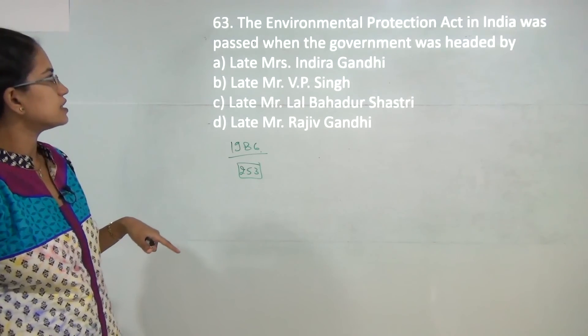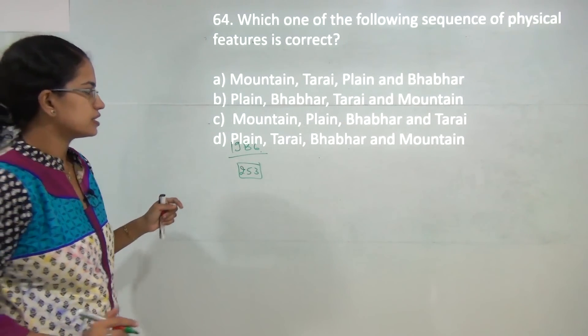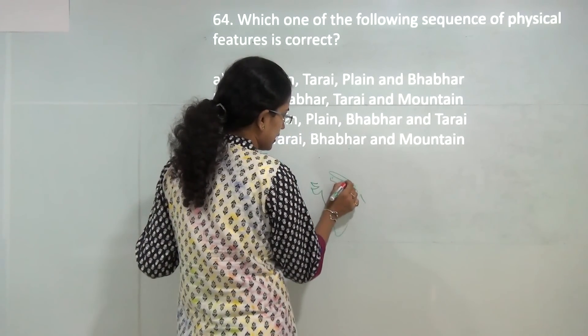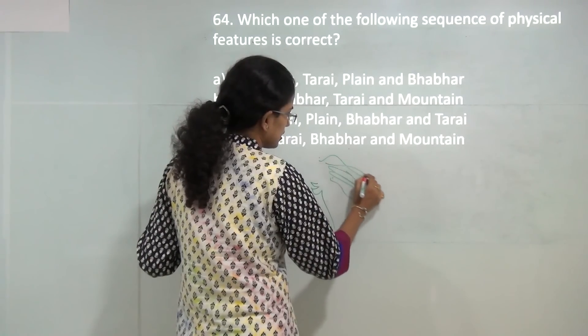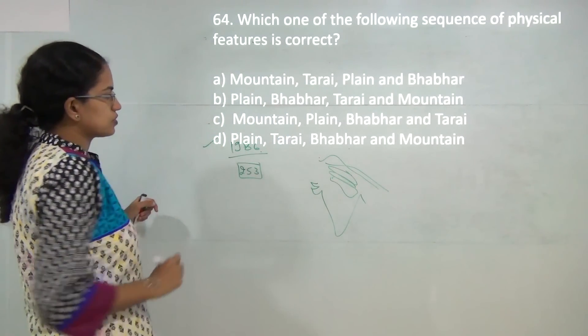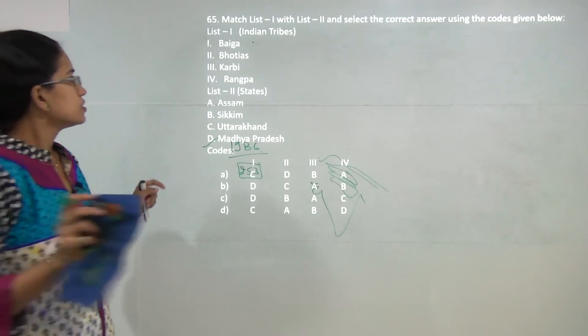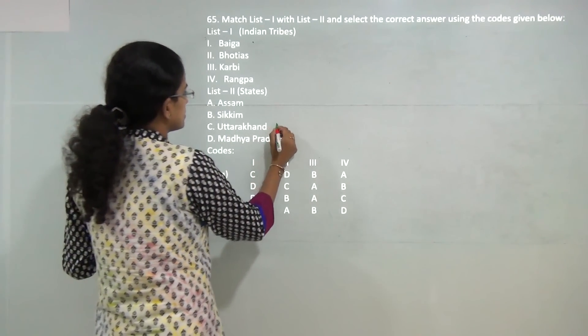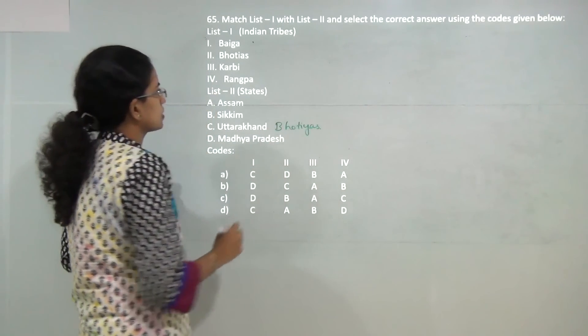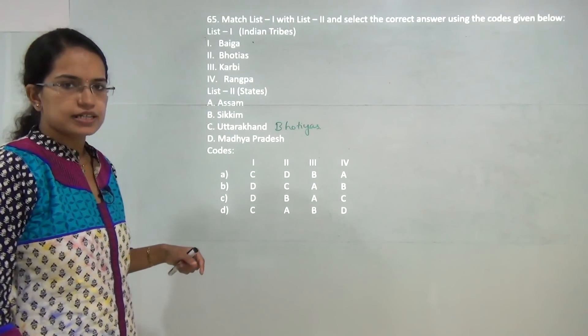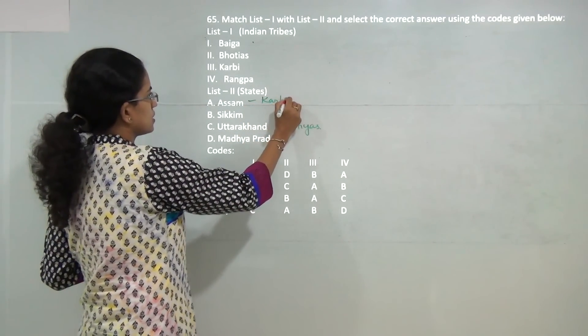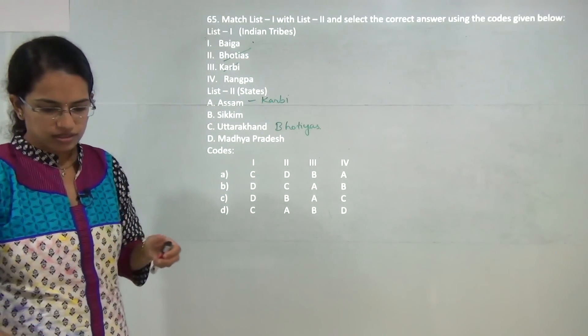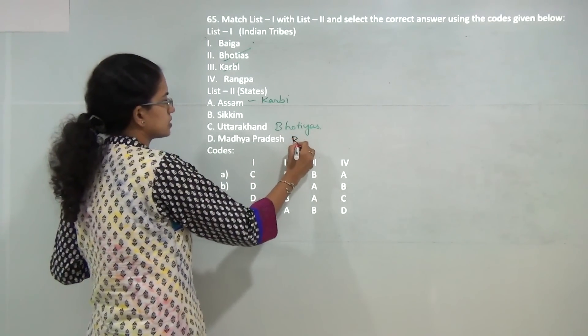Environmental Protection Act was released in 1986 under Article 253 of the constitution during Rajiv Gandhi's government. Next, which sequence of physical features is correct? If we go to the map of India, you have the Indo-Gangetic plains, then the Tarai area, the Bhabar area, and finally the Himalayan mountain range. So plains, Tarai, Bhabar, and mountains would be the correct order. Next, match the tribes with their states. Bhutia tribe is commonly found in Uttar Pradesh, Karbi tribe is found in Assam, Baiga tribe is found in Madhya Pradesh, and Rangapa tribe is found in Sikkim.